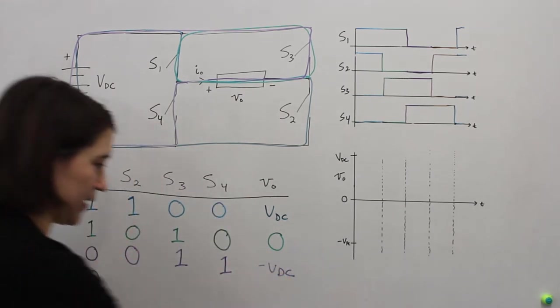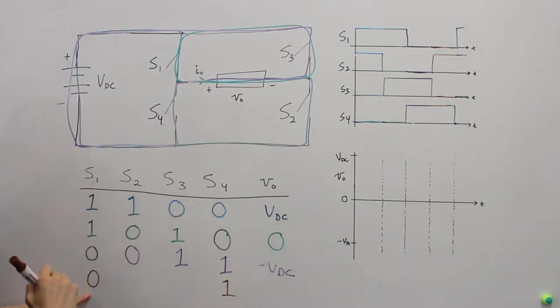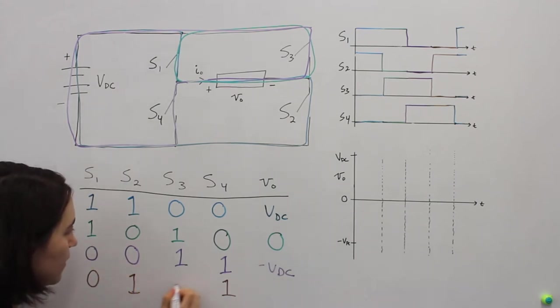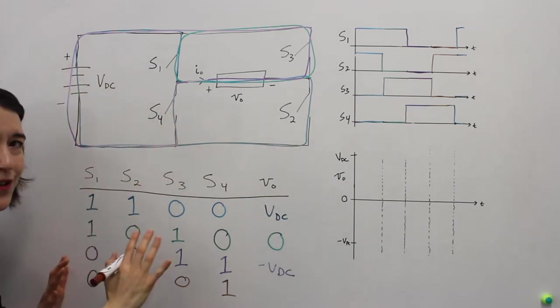Let's go to the last combination. Here, again, this is 0. This must be 1. And now we'll switch these two. 1 and 0. So these are all the switching combinations for the ideal full bridge inverter.